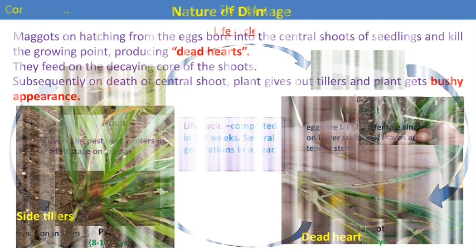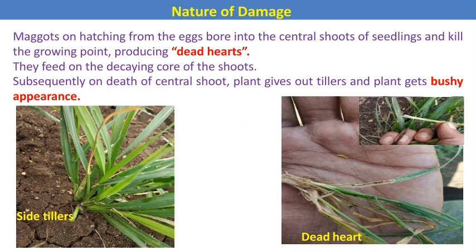The damaging stage is maggots. The maggots enter the central shoot of the wheat crop and feed on the inner content, which may be the phloem tissue. In case of severe infestation, the central shoot withers and dries up, and the leaves become yellowish in color. Due to this feeding, the central shoot is completely killed — this symptom is called the dead heart symptom. Subsequently, the plant produces side tillers and becomes bushy in appearance, indirectly reducing yield.